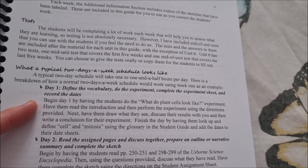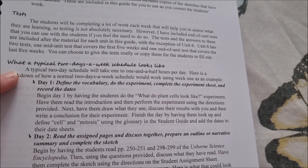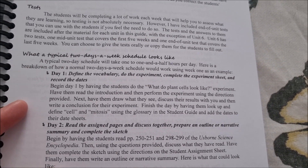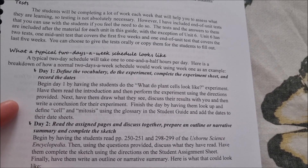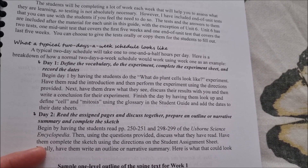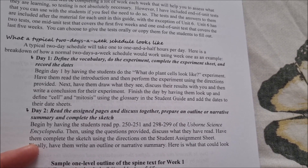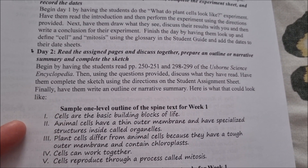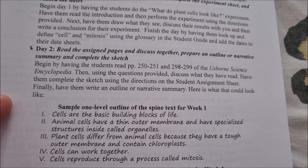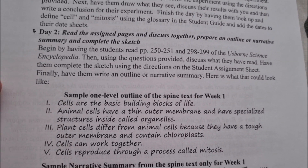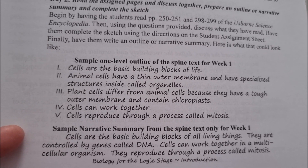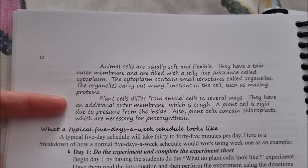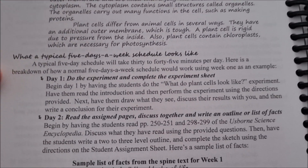For a two-days-a-week schedule, day one you'd define the vocabulary, do the experiment, complete the experiment sheet, and record the dates. Day two you would read the assigned pages, discuss together, prepare an outline or narrative summary, and complete the sketch. She provides an example outline for week one as a sample, then shows what a narrative summary would look like.